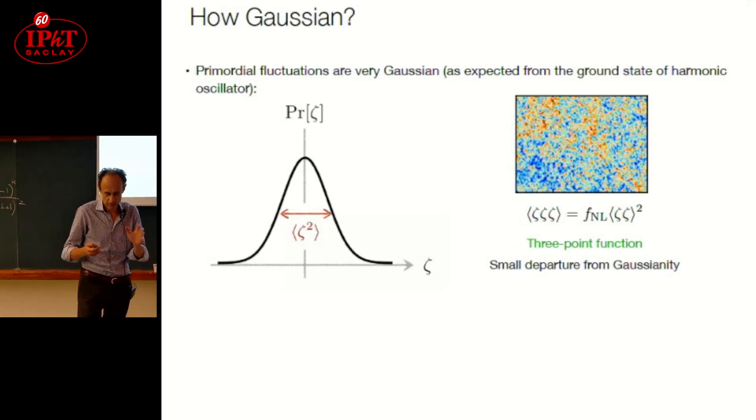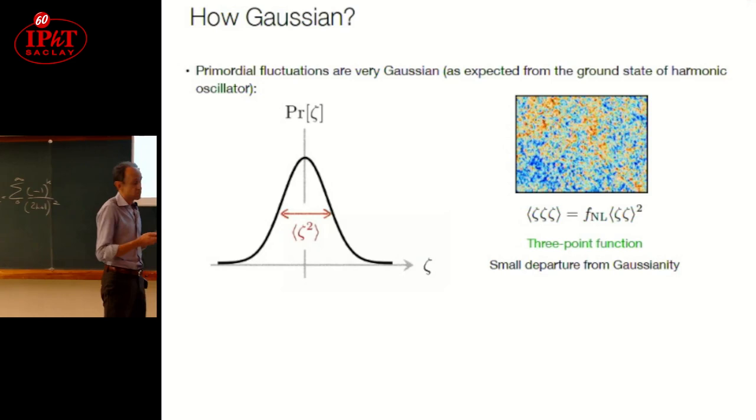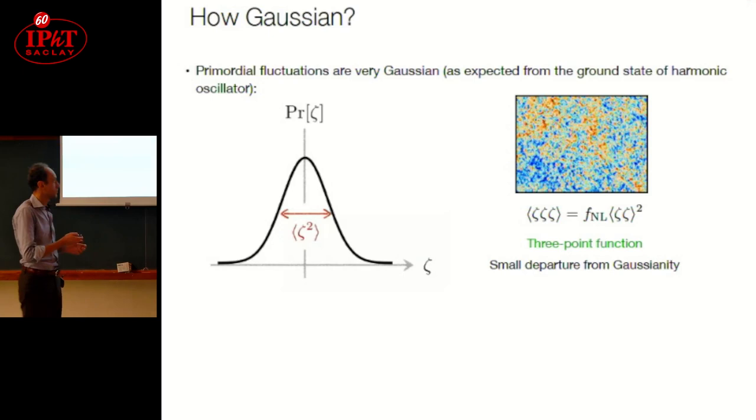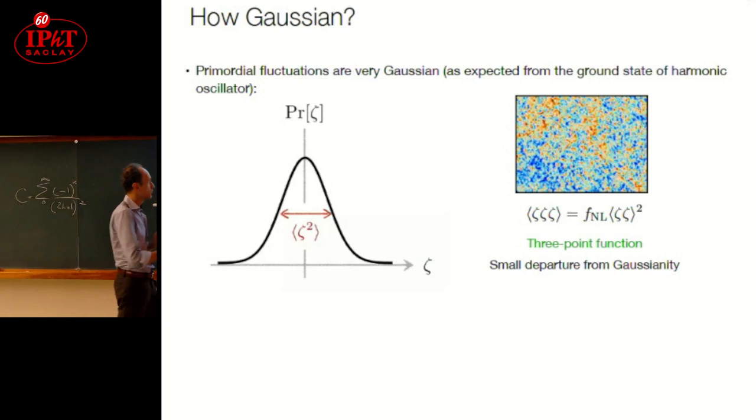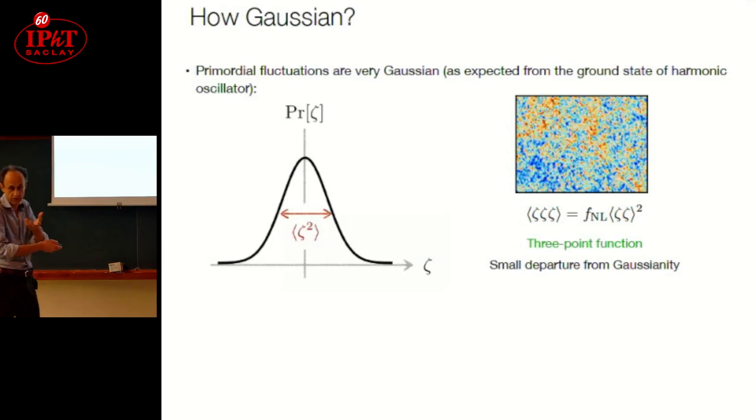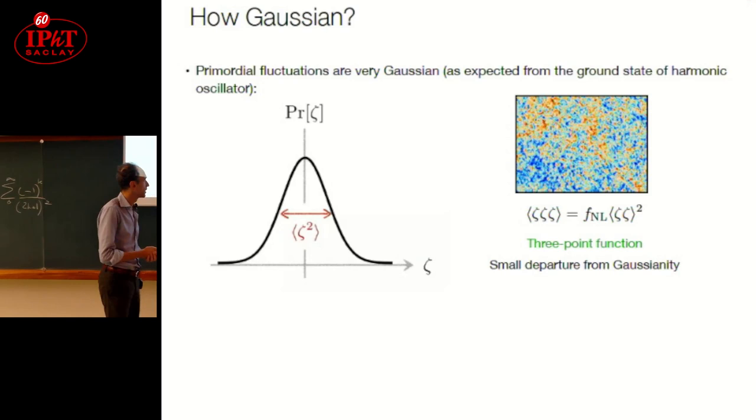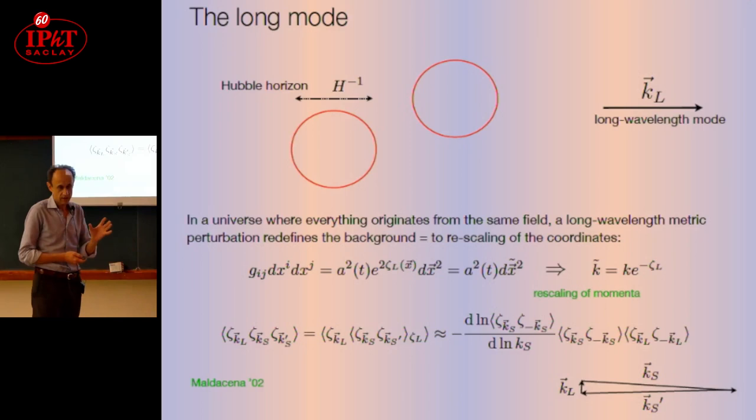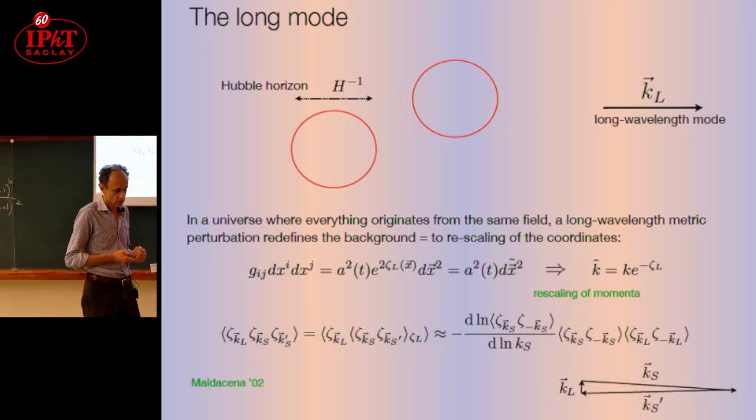In fact, this is what we measured with the CMB. A way of parametrizing this non-Gaussianity is a strength parameter called fNL. It's a function of momenta in general. It tells us how the three-point function, which should be zero for a Gaussian distribution, is related to the square of the two-point function. There is a very nice way to understand why the universe should be Gaussian, or why this fNL should be extremely small.